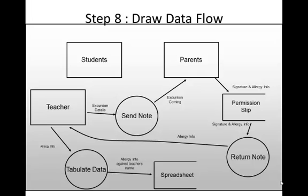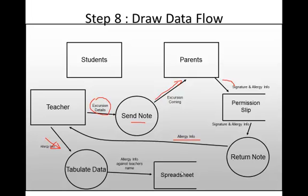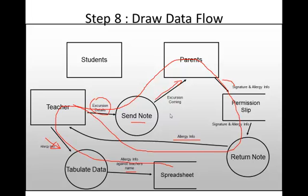Now we put the data flow in. I'll draw this using the pen tool. The teacher sends excursion details into the 'send note' process, which flows to the parents. The parents sign and put that onto the permission slip — interacting directly with the data store — which feeds into the 'return note' process, sending back allergy info to the teacher. That then goes to 'tabulate data', which stores the information in the spreadsheet against the student's name. We can see a flow of data going out one way and back in another, and sometimes flow goes in and out of the same process — that's basically how to draw a data flow diagram.